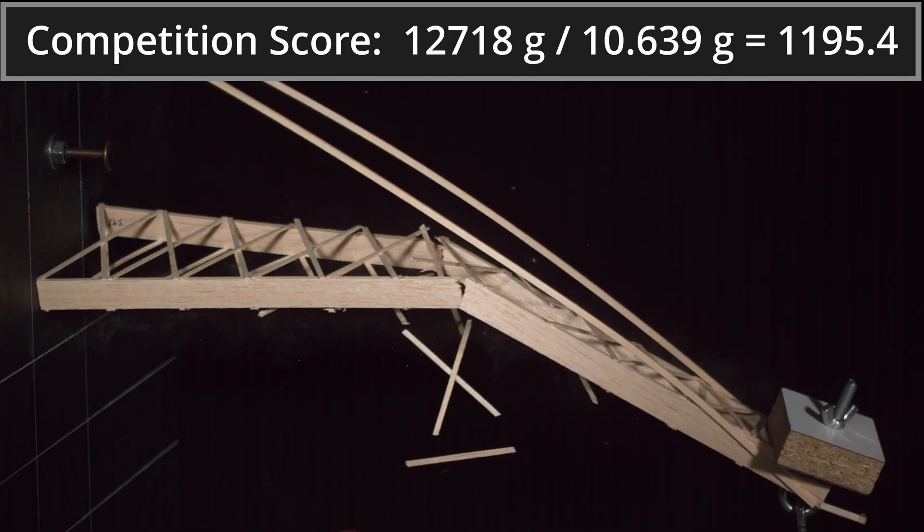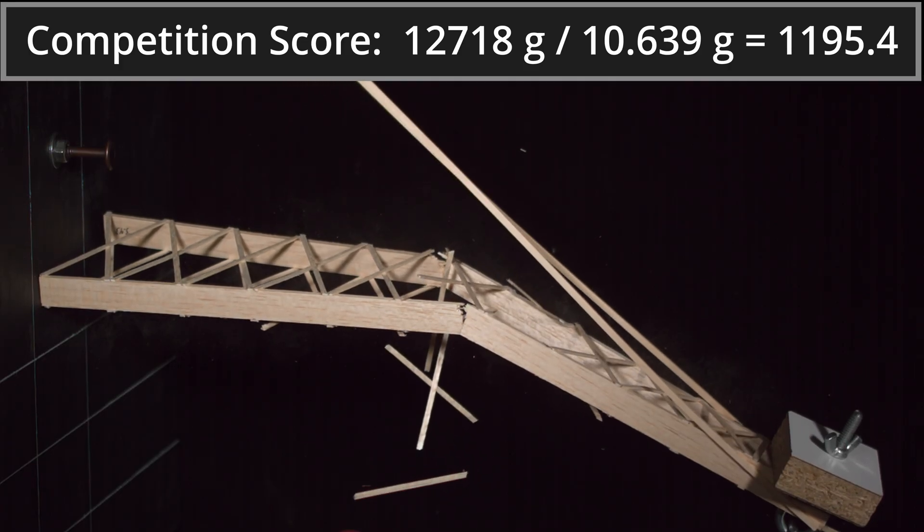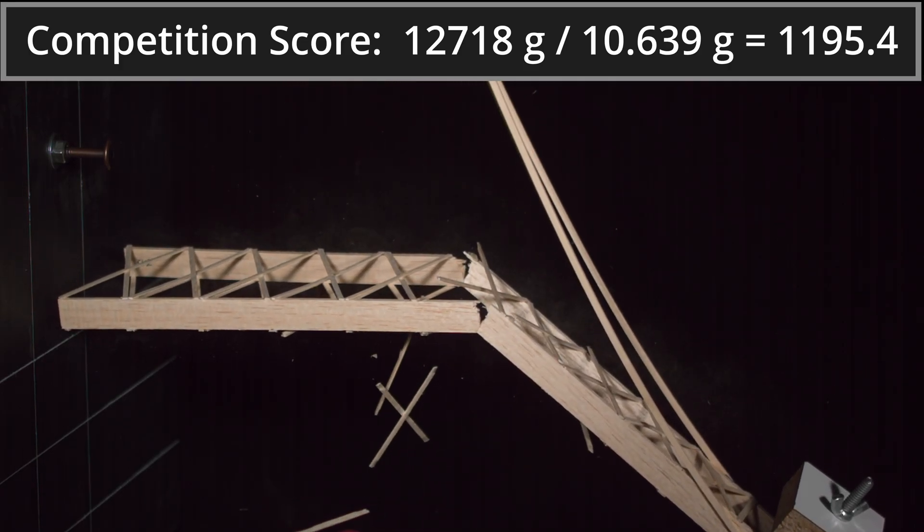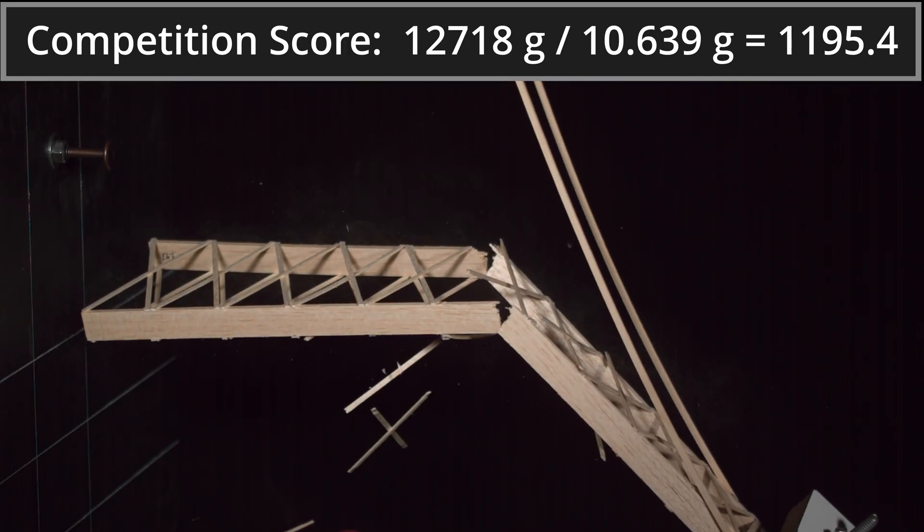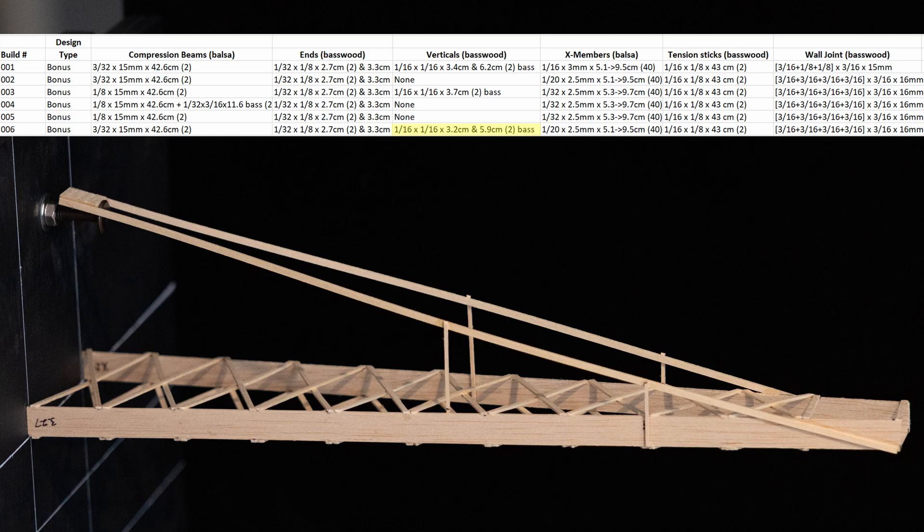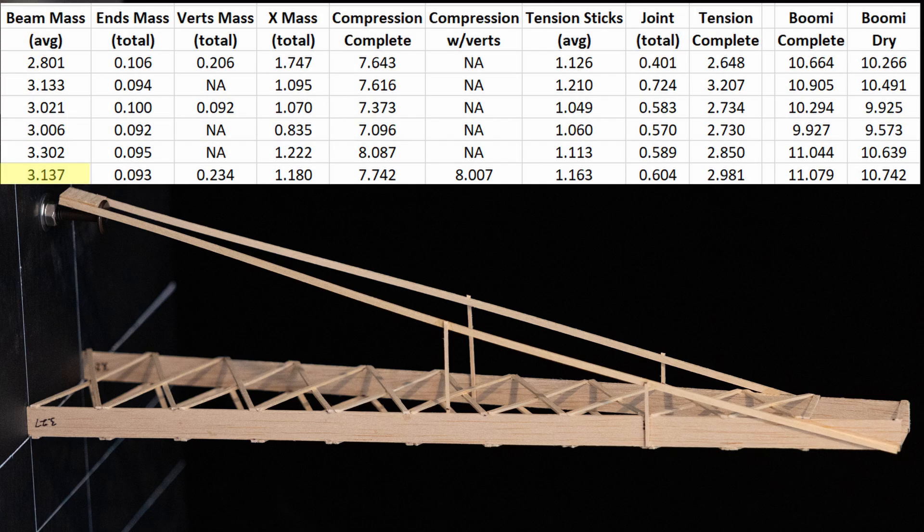For the next and final bonus build, I decided to go back to the thinner beams, increase the mass, and add back the vertical helpers. Here you can see build number 6 where I was really trying to replicate build number 2 but with the extra support verticals. The beam mass was almost identical to number 2, and the final completed mass was a very heavy 10.742 grams. Basically, if this didn't work, it was already too heavy to be competitive, so I was going to move on.